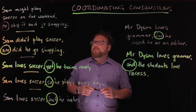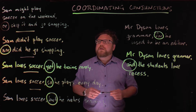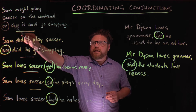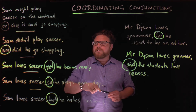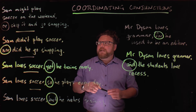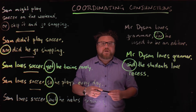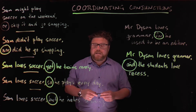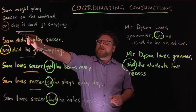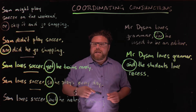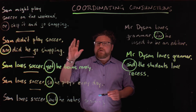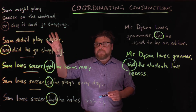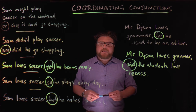So up here we've got: Sam might play soccer on the weekend or skip it and go shopping. You'll see that the subject Sam is implied in the second independent clause — Sam might play soccer on the weekend, or Sam might skip it and go shopping. We just don't repeat it because it would sound repetitive. The coordinating conjunction here is 'or,' and when we use 'or,' we're showing that there are two alternative actions that our subject Sam might do.